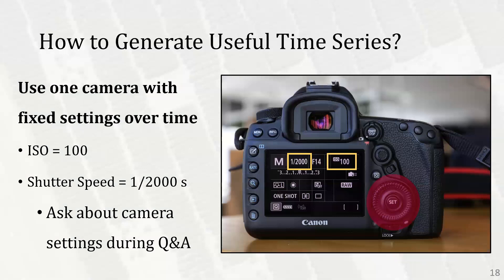Please try to stick with one camera for your time series and avoid switching cameras in the middle unless absolutely necessary, just to keep things consistent. Also use fixed settings on your camera if at all possible. In the previous webinar we recommended setting your ISO sensitivity to the lowest possible value, around 100, and your shutter speed to something like one over two thousandths of a second to minimize motion blur. If you have more questions about camera settings, please ask us during Q&A.